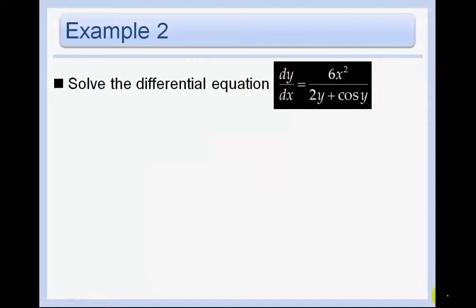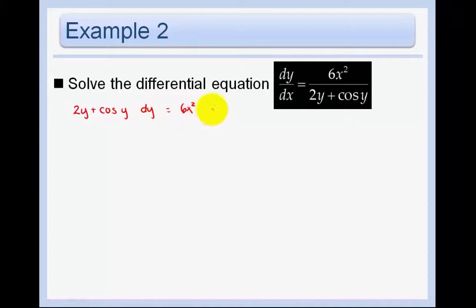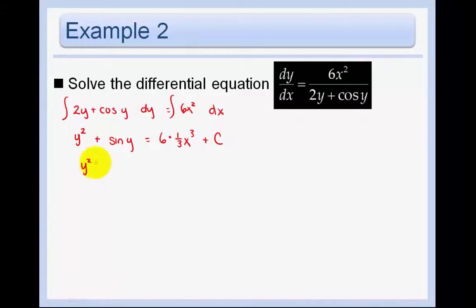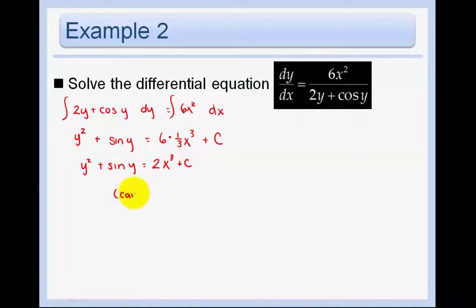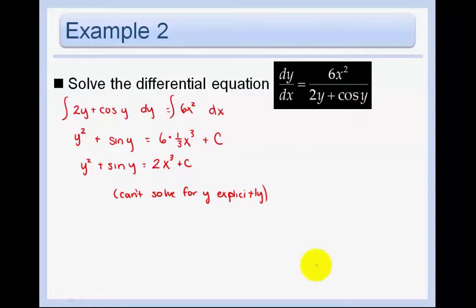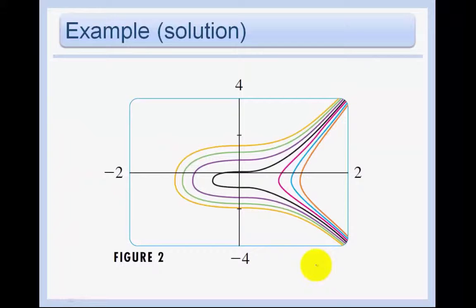Solve the differential equation dy/dx equals 6x squared over 2y plus cosine of y. Get all the y stuff on the left and all the x stuff on the right. Take the antiderivative of both sides: the antiderivative of 2y is y squared, the antiderivative of cosine is sine, and the antiderivative of 6x squared is 2x cubed plus c. So we have y squared plus sine y equals 2x cubed plus c. In this one, we can't actually solve for y explicitly, so that is all we can do. We don't have an initial condition, so we don't know what our particular solution is in this case.